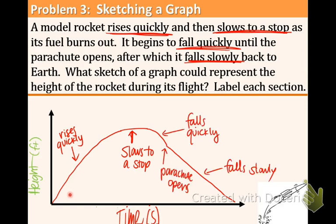So let's go through this again. This is what's happening to the model rocket. It rises quickly and it slows to a stop as the fuel burns out. And then what happens is that it's falling quickly because of gravity. Then the parachute opens at this point right here and it falls slowly back to the earth.